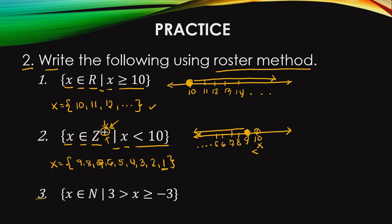Third example: we have a set of x is an element of natural numbers such that x is less than 3 but greater than or equal to negative 3. Let's draw the number line — starting at 3: 3, 2, 1, 0, negative 1, negative 2, negative 3.